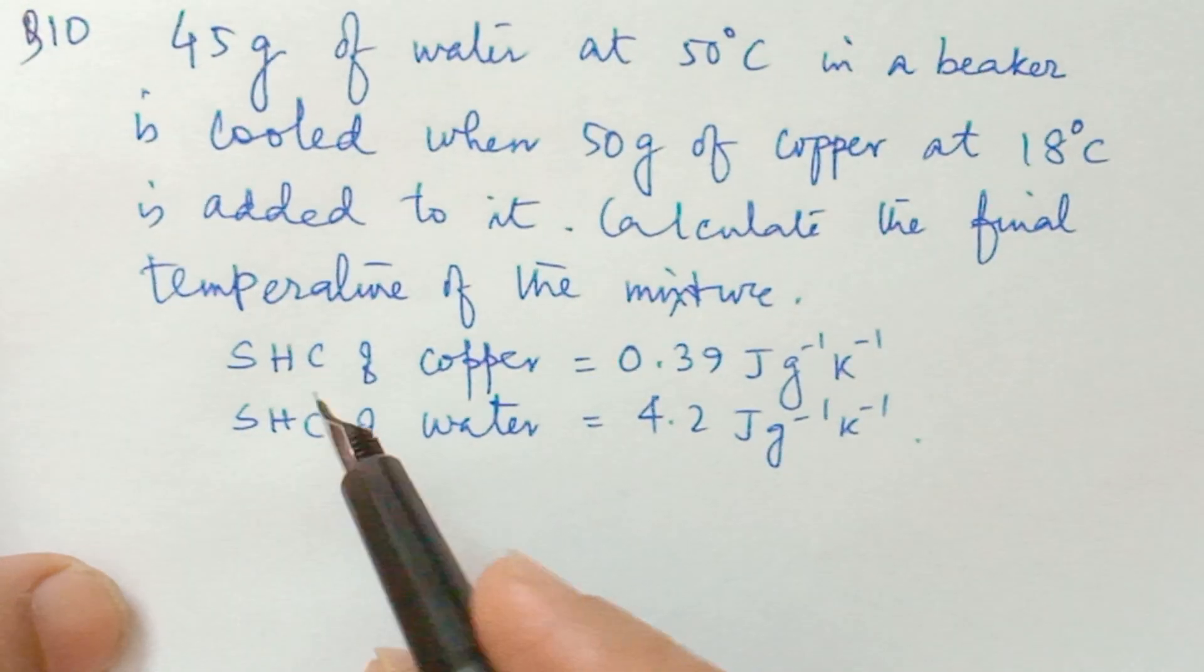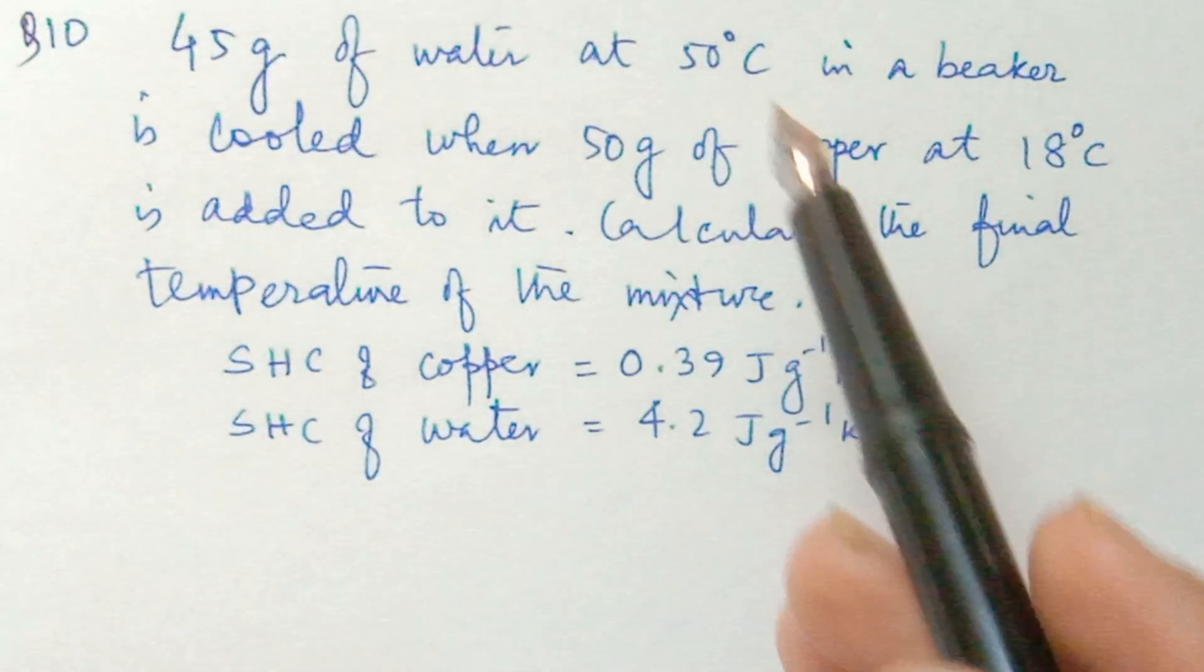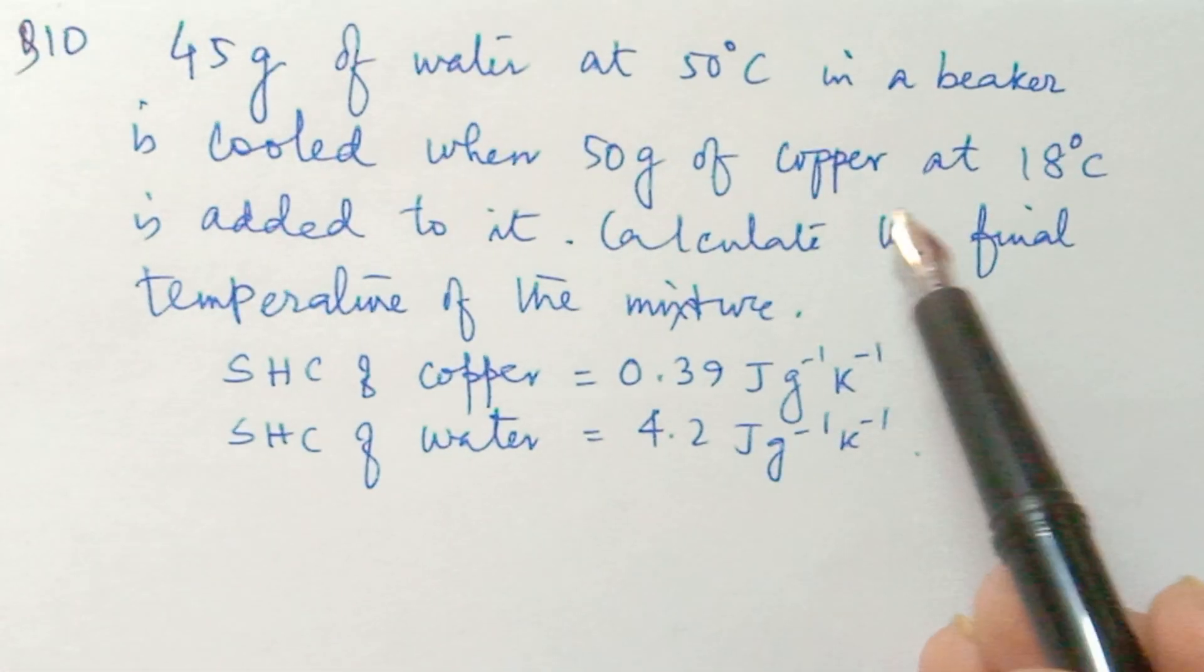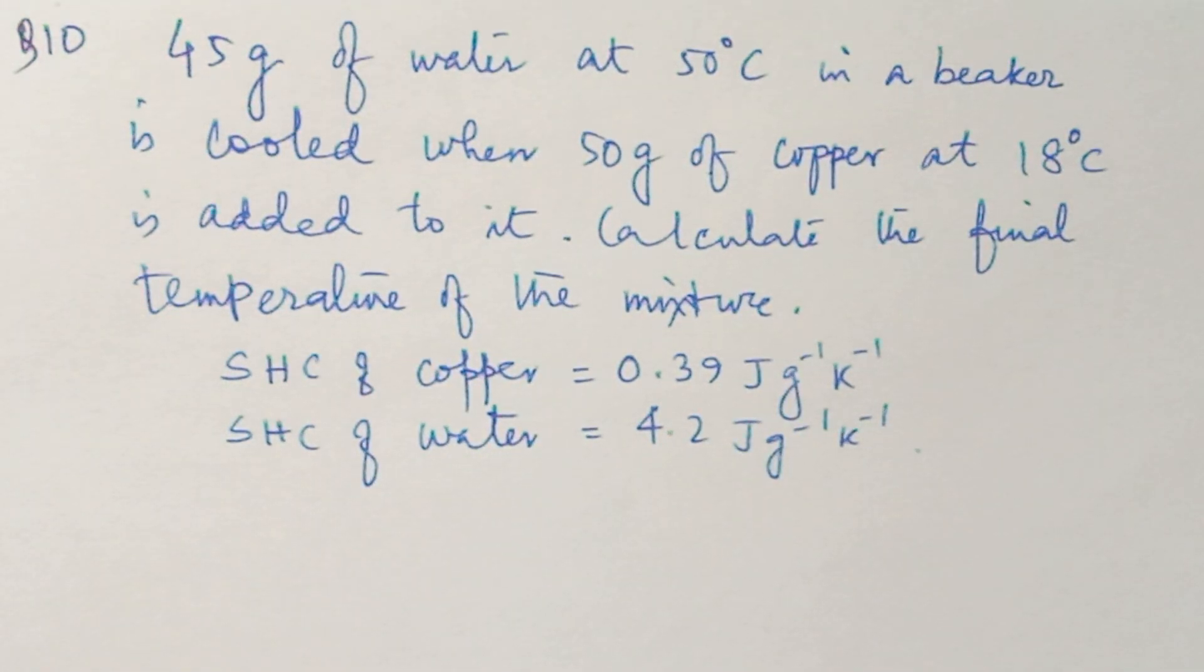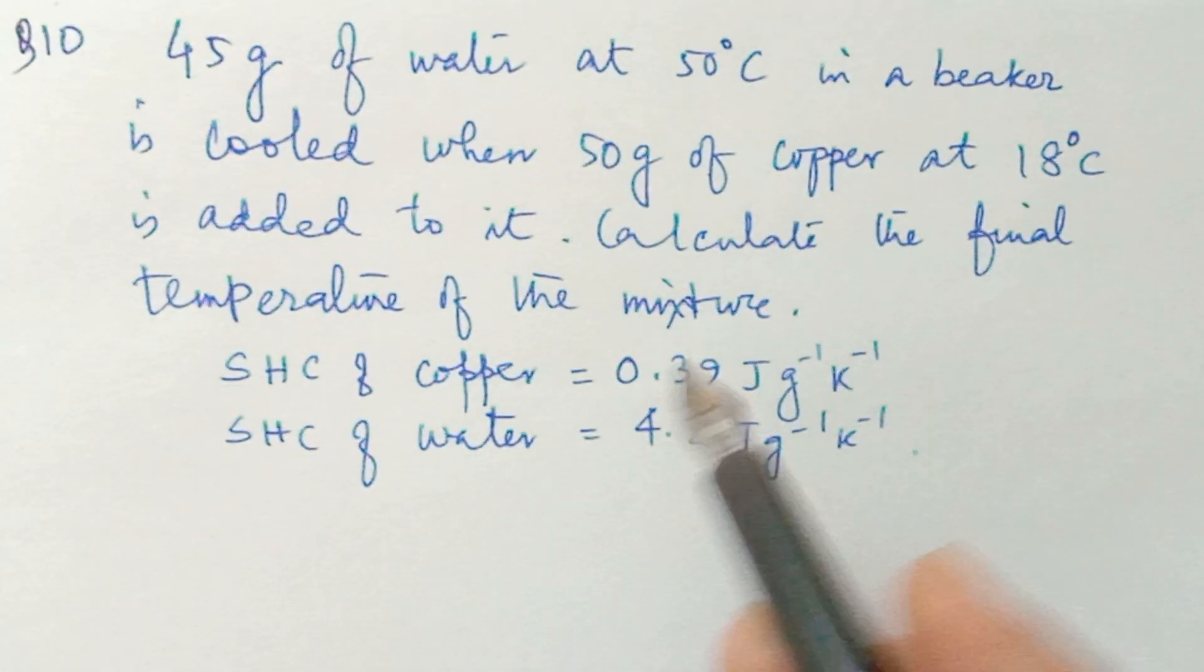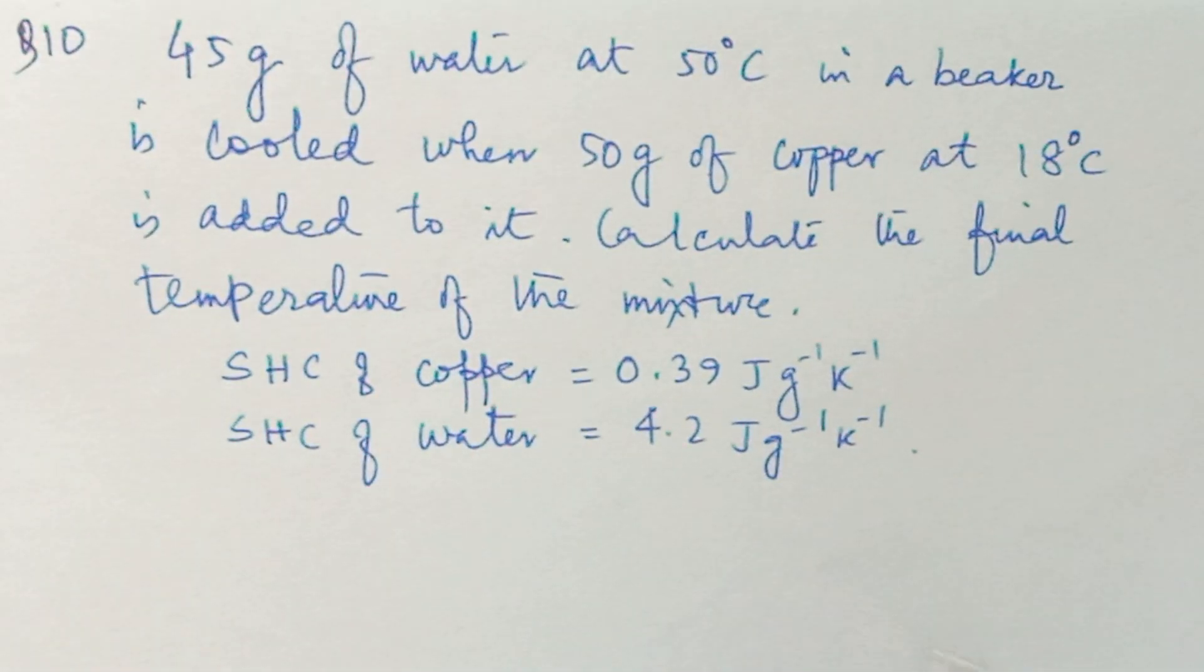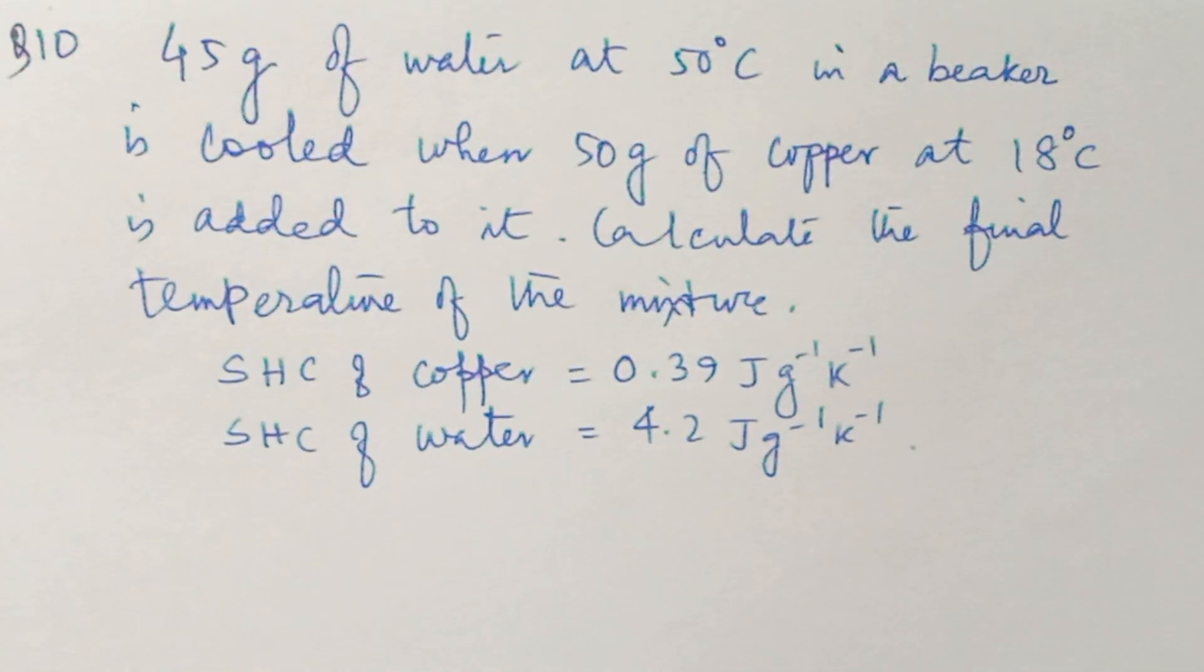It is a question like this: 45 gram of water at 50 degree Celsius in a beaker is cooled when 50 gram of copper at 18 degree Celsius is added to it. Calculate the final temperature of the mixture. We have given the specific heat capacity of copper and the specific heat capacity of water. We have to find the final temperature.